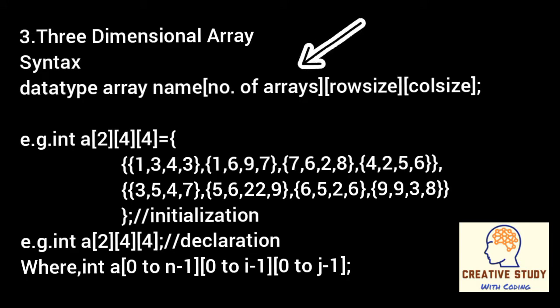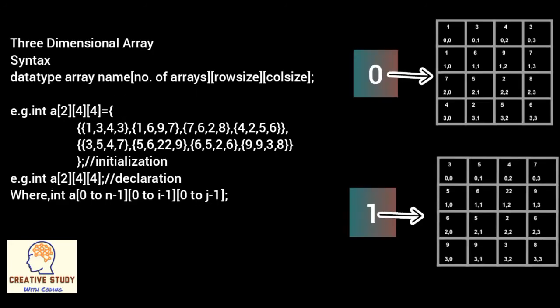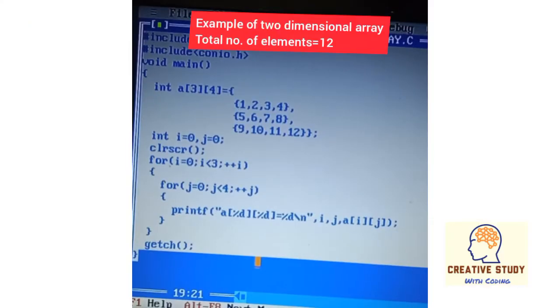Now let's see the syntax of a three-dimensional array: data type, array name, number of arrays, row size, column size. In the initialization of a three-dimensional array we can increase the curly braces. So in int a[2][4][4] we have two two-dimensional arrays.